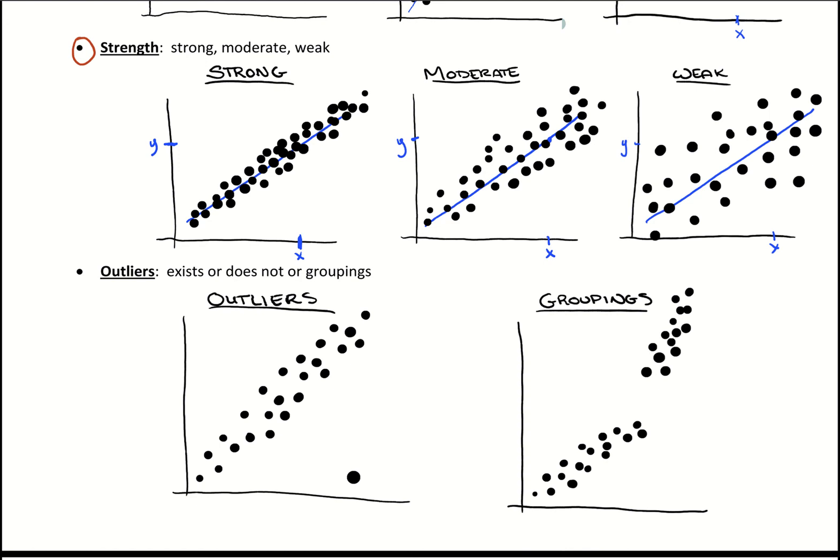This would suggest that there's groupings within our data. Like if this was age and we were mapping, I don't know, something that related to age, maybe this would be the difference of like childhood to being a teenager and then teenager to adult.